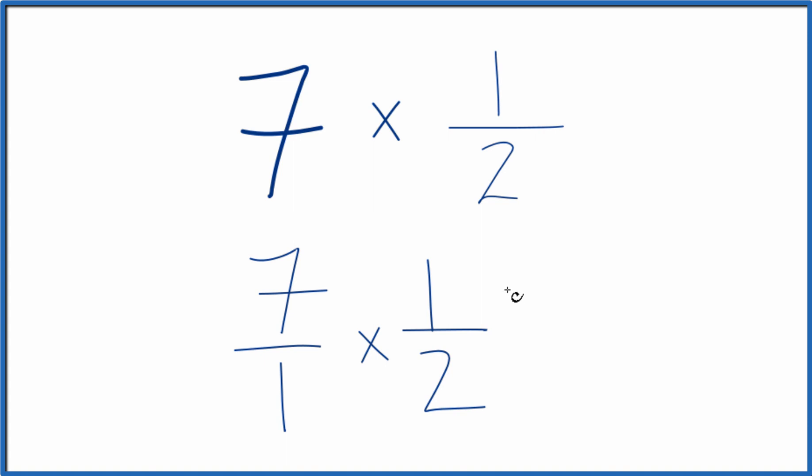So when we multiply fractions, we multiply the numerators, then the denominators. 7 times 1 equals 7. 1 times 2, that equals 2.